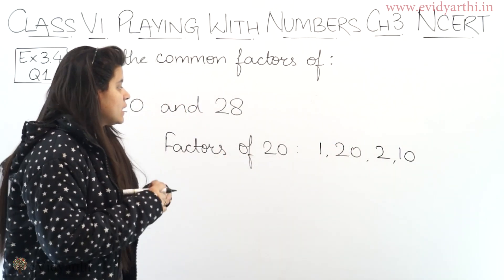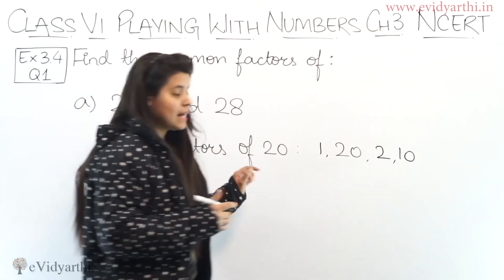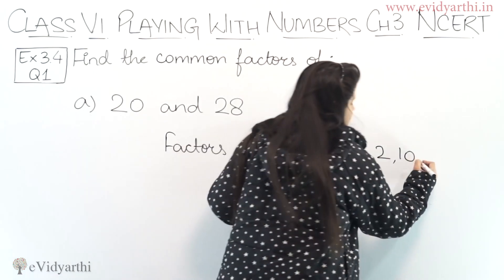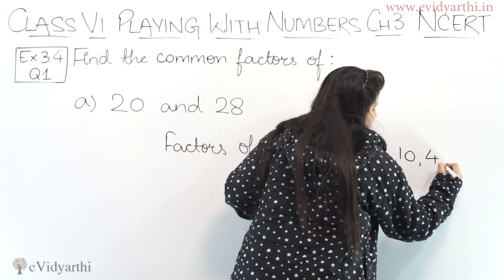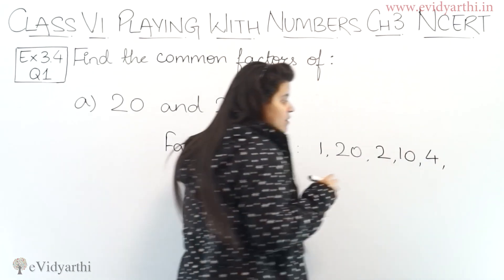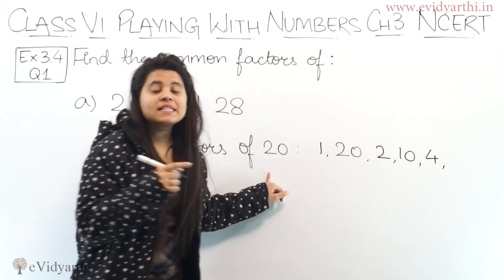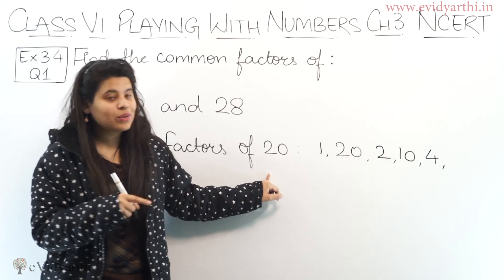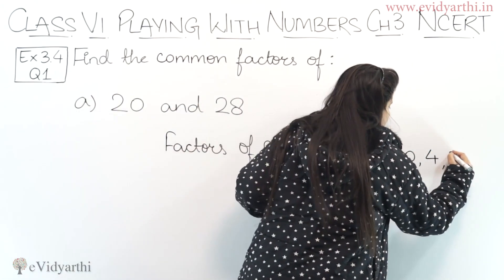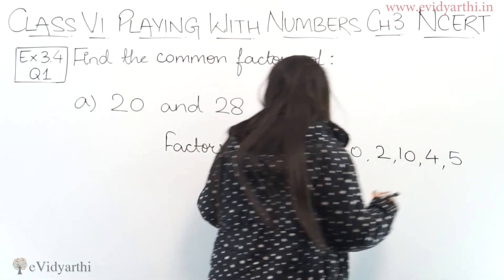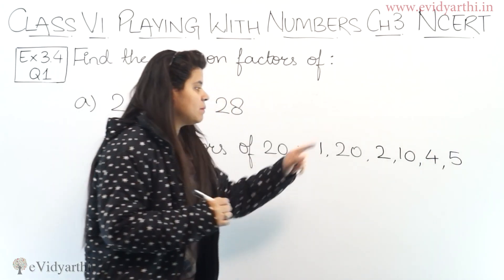After that, 3 is not a factor of 20. Then 4: since 4 into 5 is 20, so 4 and 5 are factors of 20.